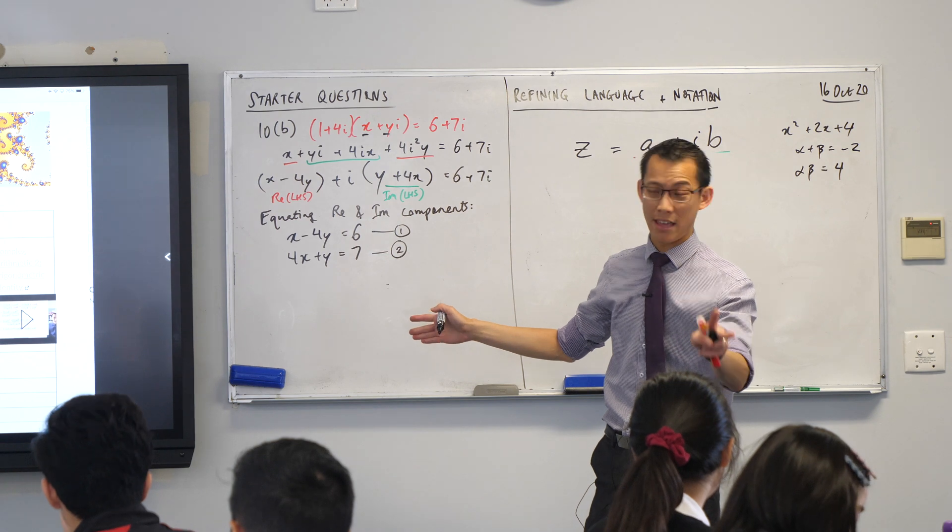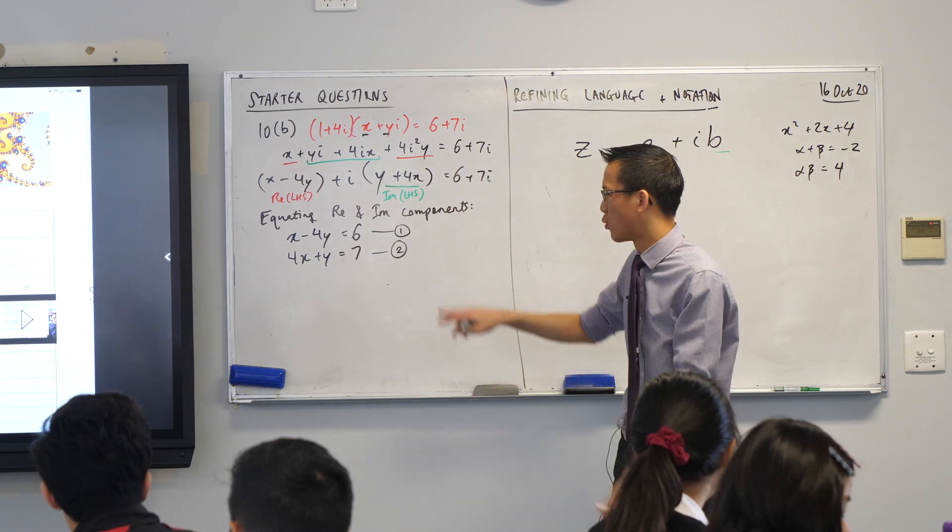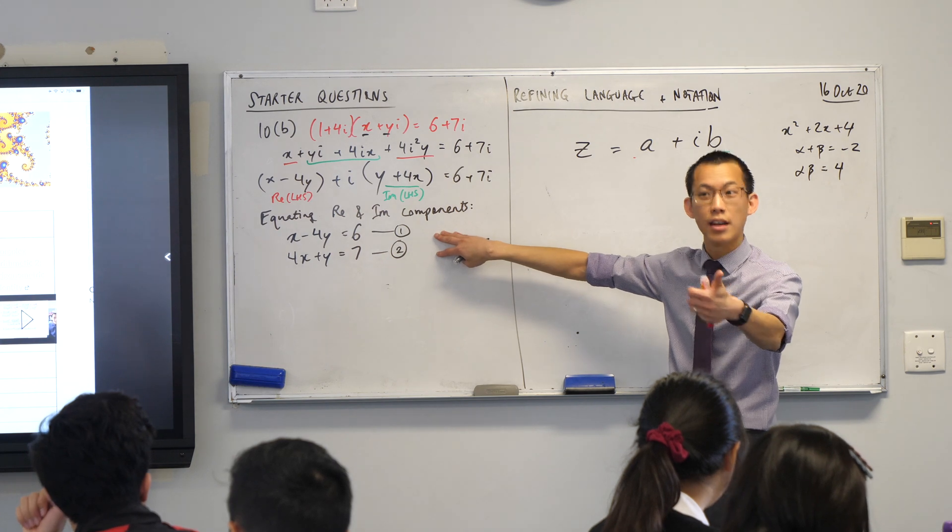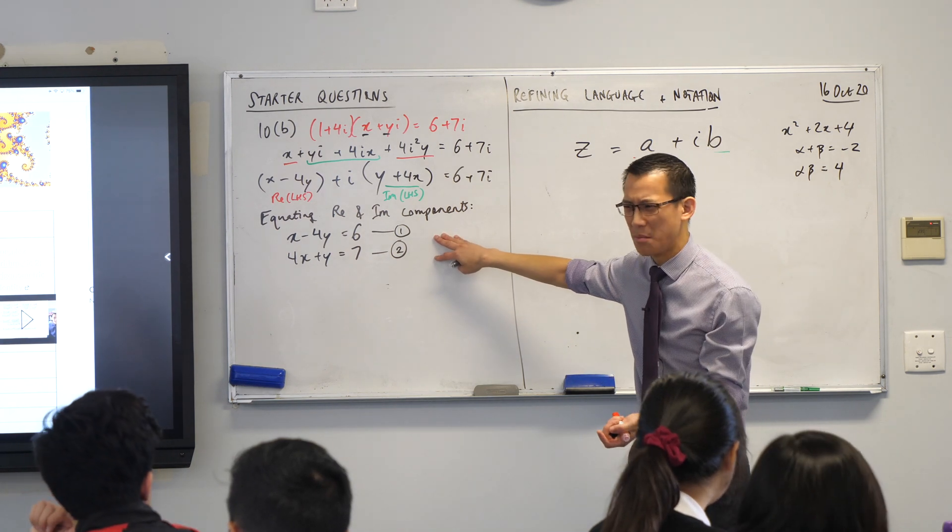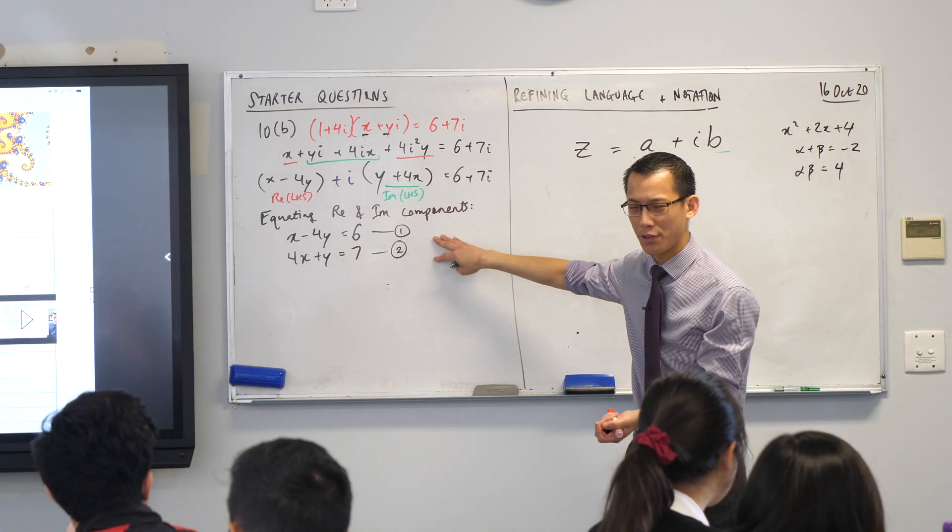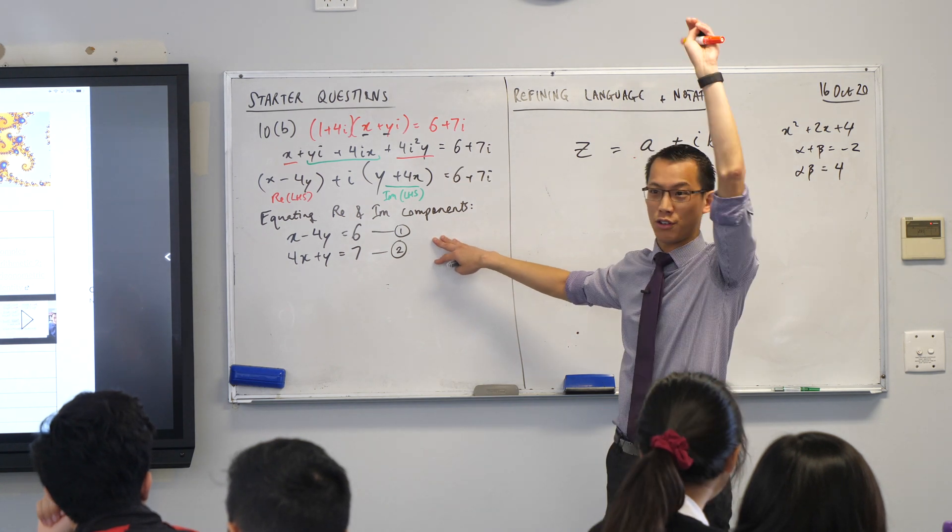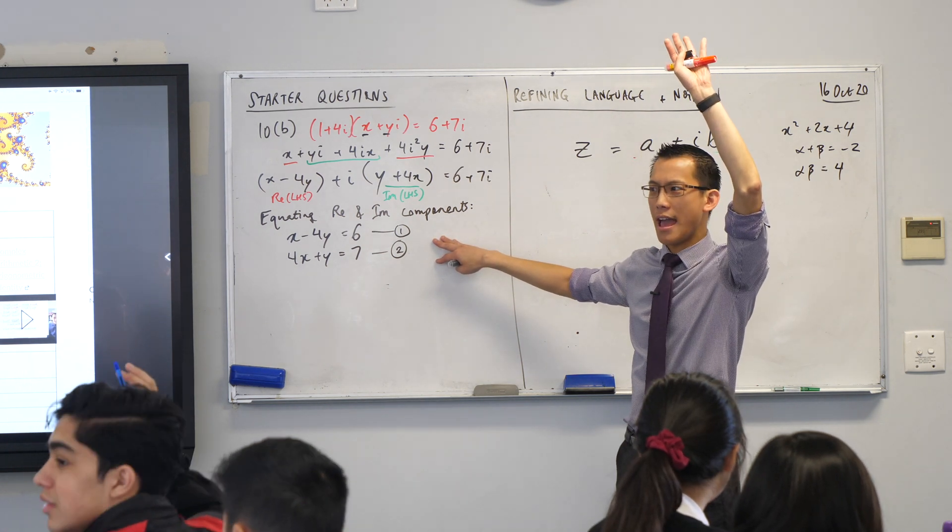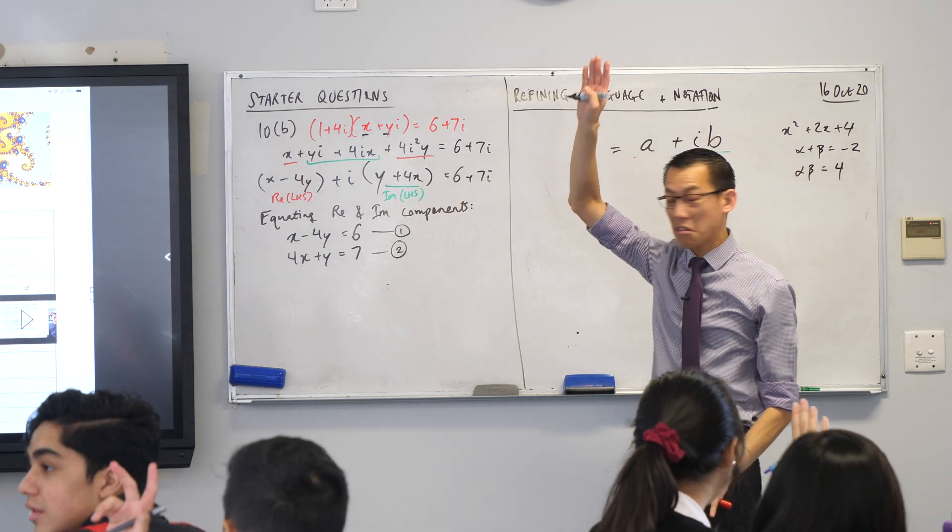Anyway, one quick note, just because I was looking around at some of the working that you did was, you fairly quickly realized, you're like, oh, this is back to stage 5 stuff. Like, I've solved simultaneous equations before. You've got two methods or two strategies generally at your disposal. What are they, by the way? Substitution and elimination. Did most of you go for elimination? Or did most of you go for substitution?